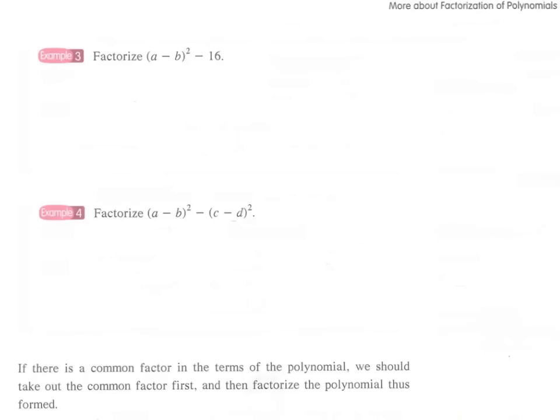Factorize the square of a minus b minus 16. Again we have a very obvious pattern of the difference of two squares, but this time the first square number is a bit more complicated.